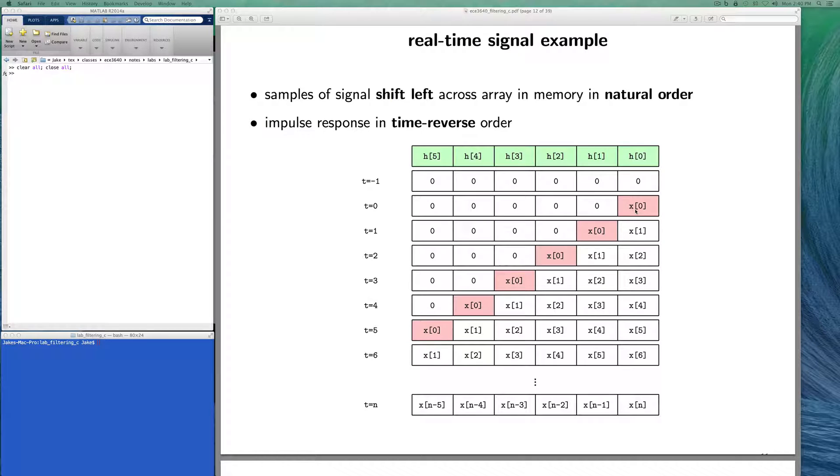Then at time one, y1 equals h0 times x1 plus h1 times x0. We see that the data is shifting into the array at the right, and each time before we shift in a new sample, we have to shift all the other samples in the array over one to the left, and then we can put the newest sample that has become available in at the far right.